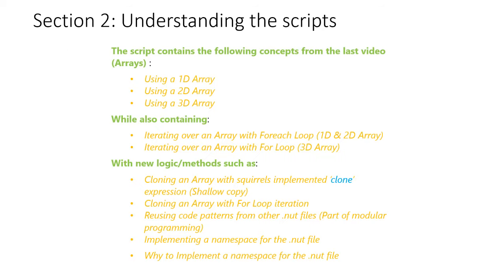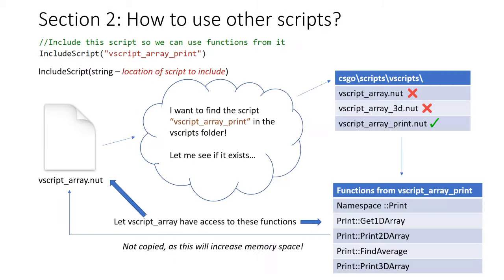Section 2 is understanding the scripts used in the video. You have to have a good knowledge of 1D, 2D, and 3D arrays. This video continues iterating over arrays with a for-each loop in the 1D and 2D array, and we're going to be iterating over the 3D array with a for loop. New things being introduced include: cloning an array with Squirrel's implemented clone expression, which is a shallow copy; cloning an array with a for loop iteration; using code from other .nut files as part of modular programming; and implementing a namespace for the file.